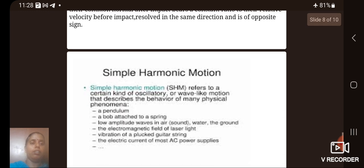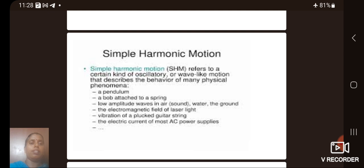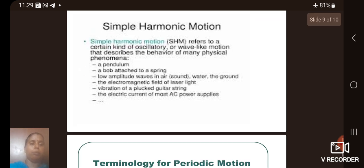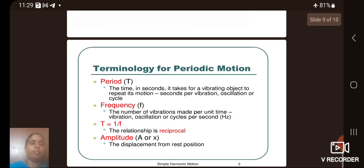Then next we see simple harmonic motion. Simple harmonic motion refers to a certain kind of oscillatory or wave-like motion that describes the behavior of many physical phenomena: a pendulum, a bob attached to a spring, low amplitude waves in air, water, the ground, the electromagnetic field of laser light, vibration of a plucked guitar string, the electric current of most AC power supplies, etc. Next piece is the terminology. Terminology for periodic motion is period, frequency, and amplitude.